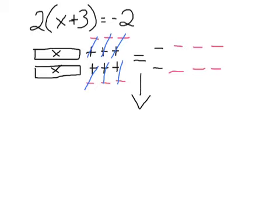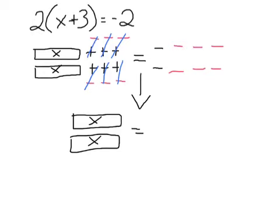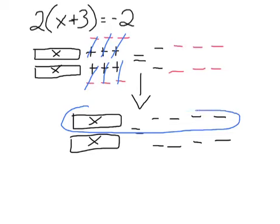I'm going to redraw what I have: my 2X tiles by themselves equals negative 8 on the right side. I'll keep them in line with the Xs because that helps us figure out what 1 X tile is. So now this is the same as 2X equals negative 8. I circle one row of our setup, and that tells us what X equals. X is the same as negative 4, so X must equal negative 4.